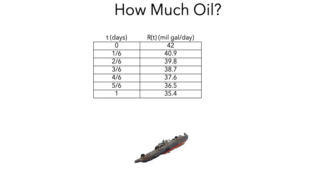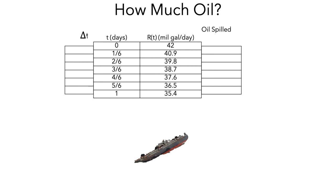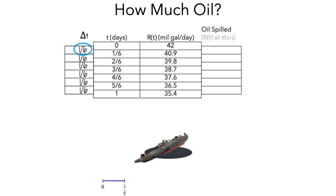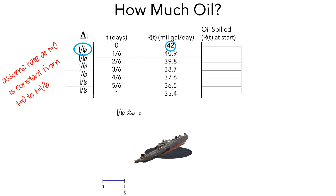Now we'll add space to record the lengths of the time intervals and the amounts of oil spilled during each interval. To approximate the amount of oil spilled between time 0 and 1/6 of a day, we assume the rate at the beginning of the interval — 42 million gallons per day — stays constant for the entire interval. Multiplying 1/6 of a day by 42 million gallons per day gives 7 million gallons of oil.